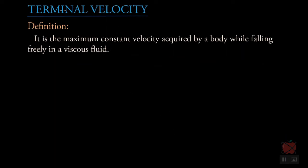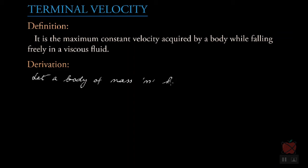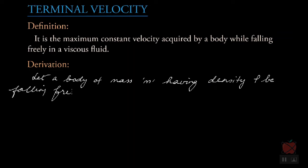Terminal velocity is defined as the maximum constant velocity acquired by a body while falling freely in a viscous fluid. Terminal velocity has many applications in real life. Now let us derive the expression for terminal velocity. Let a body of mass m having density rho be falling freely in a viscous fluid.